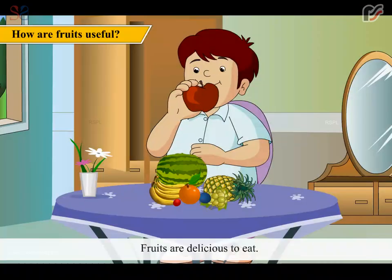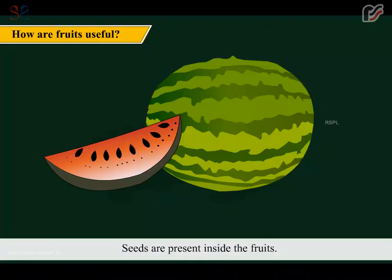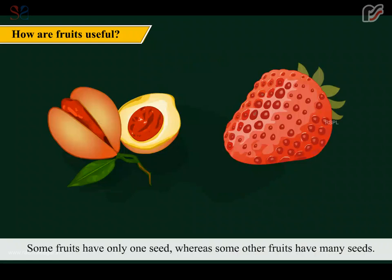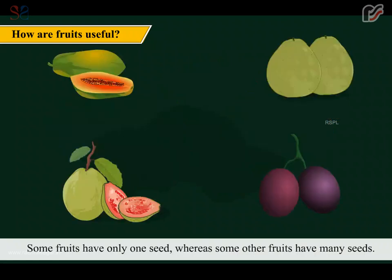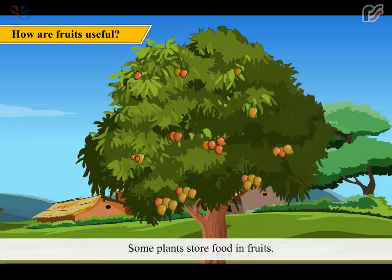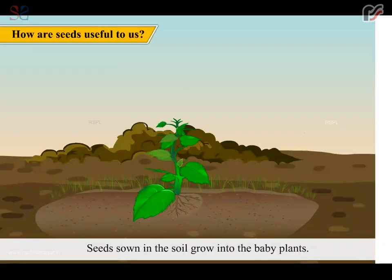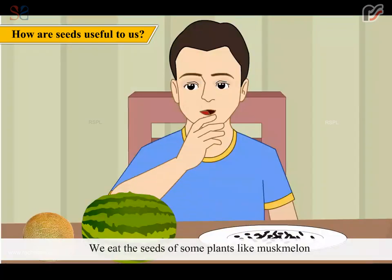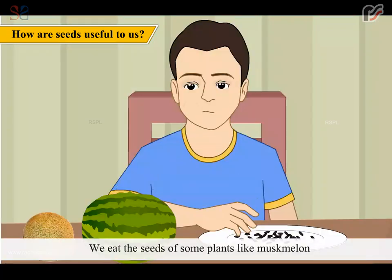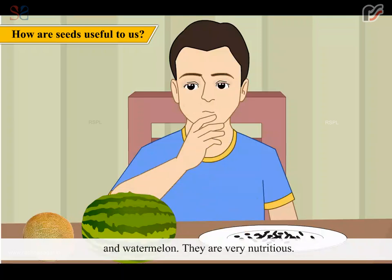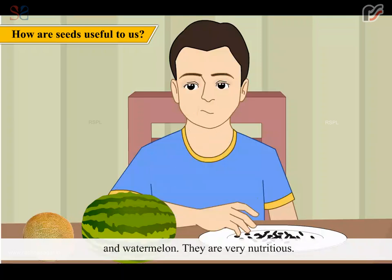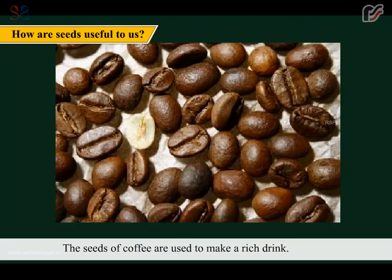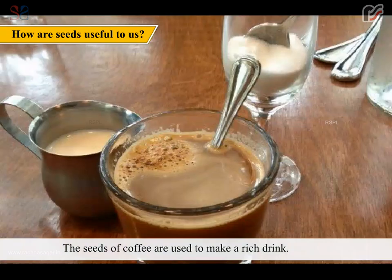Fruits are delicious to eat. Seeds are present inside the fruits. Some fruits have only one seed, whereas some other fruits have many seeds. Some plants store food in fruits. Seeds sown in the soil grow into baby plants. We eat the seeds of some plants like muskmelon and watermelon. They are very nutritious. The seeds of coffee are used to make a rich drink.